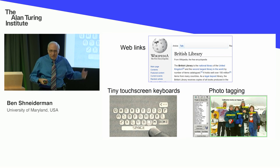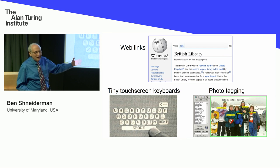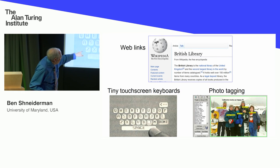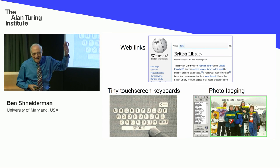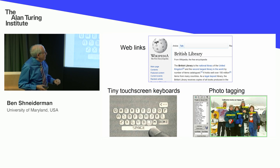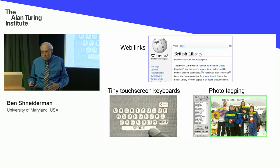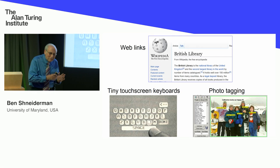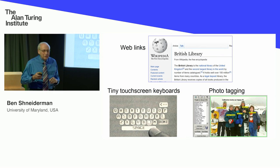Photo tagging was another simple idea driven by real needs. I have about 40,000 photos on my laptop and I'm always looking for pictures of certain people. The idea of dragging a name from a list, dropping it, and clicking it in place so you could name all the people was work we did in the early 2000s, for which I got a patent, and the paper on that is cited by 57 patents.